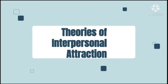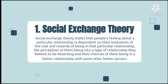Theories of Interpersonal Attraction. There are many theories to explain interpersonal attraction, including social exchange theory, balance or cognitive consistency theory, equity theory, and evolutionary theory. Social Exchange Theory states that people's feelings about a relationship depend on their evaluation of the costs and rewards of being in that relationship, their perception of what relationship they deserve, and their chances of being in a better relationship with someone else. The relationship's outcome is found by subtracting costs from rewards. The level of satisfaction is dependent on the individual's comparison level, and the likelihood of staying in an unsatisfactory relationship is determined by the level of comparison for alternatives. This theory is mostly supported by research evidence.